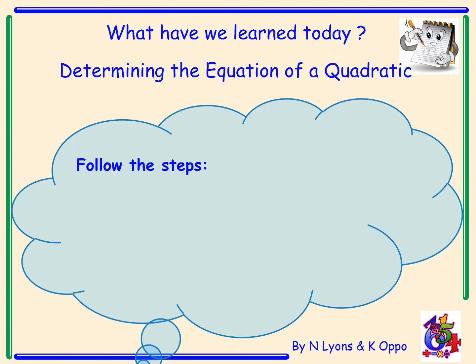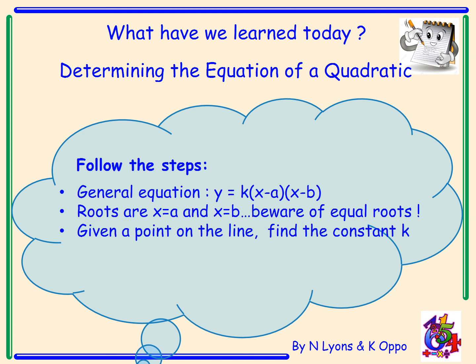What we learned today: determining the equation of a quadratic parabola. Follow these steps — write down the general equation: y equals k times x minus a times x minus b. The roots are x equals a and x equals b. Watch out for equal roots, like in question 3. Given any point on the line, you can find the constant k. That's us finished for today — I'll see you in class soon.